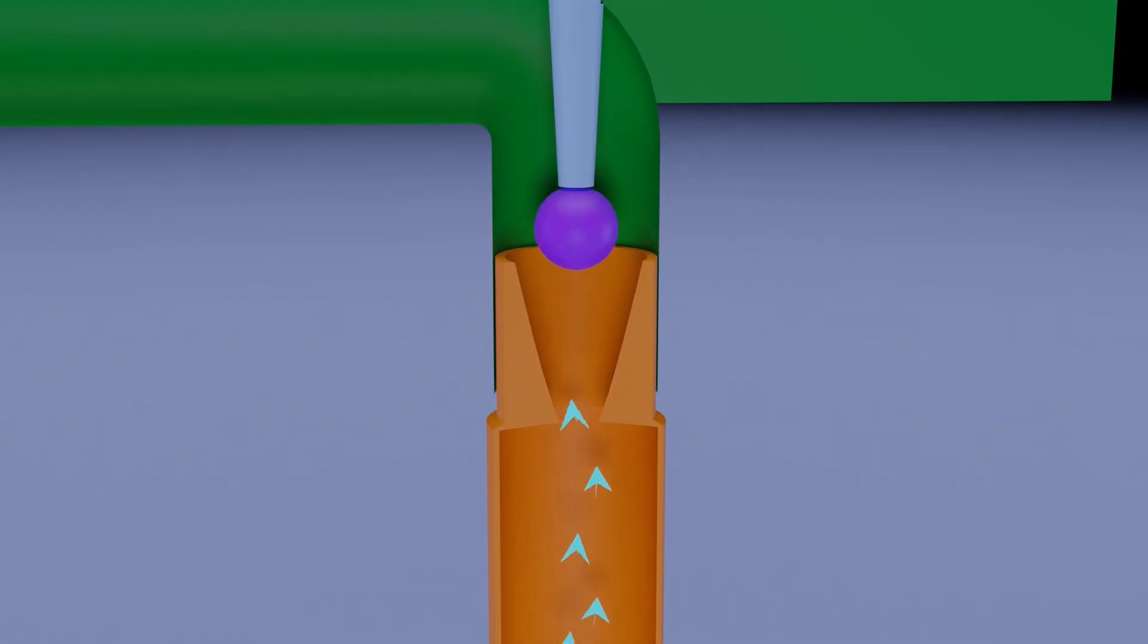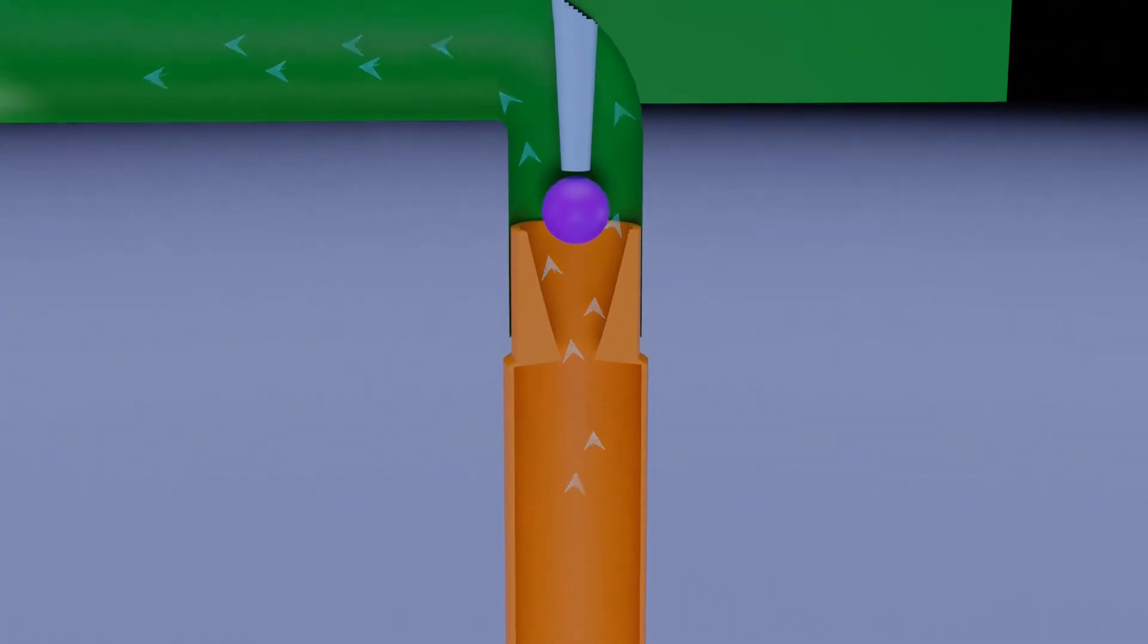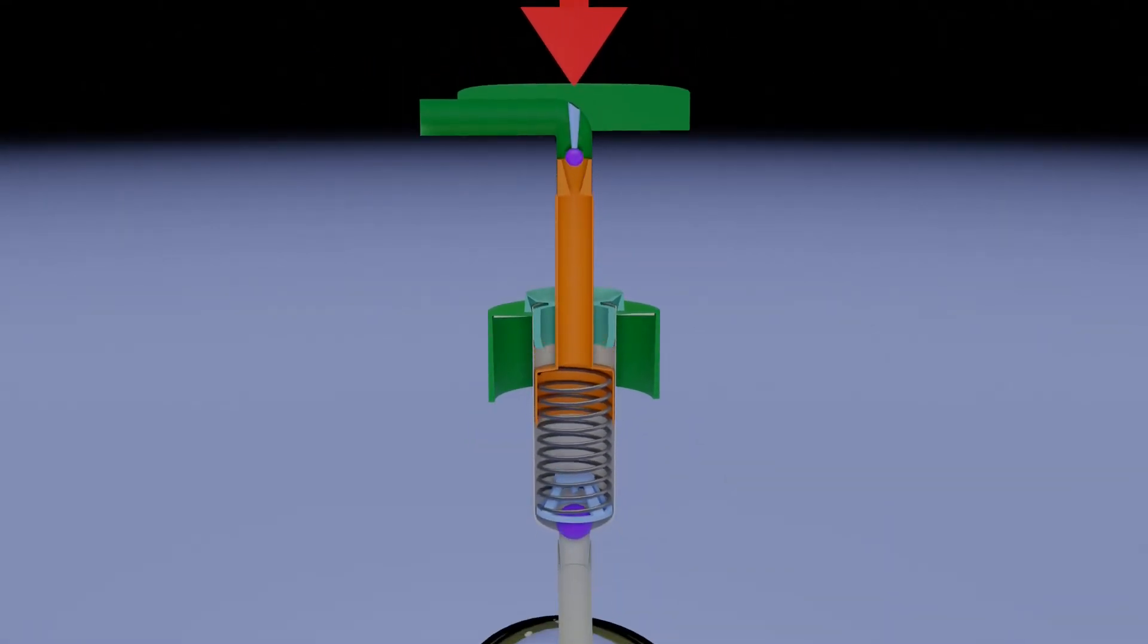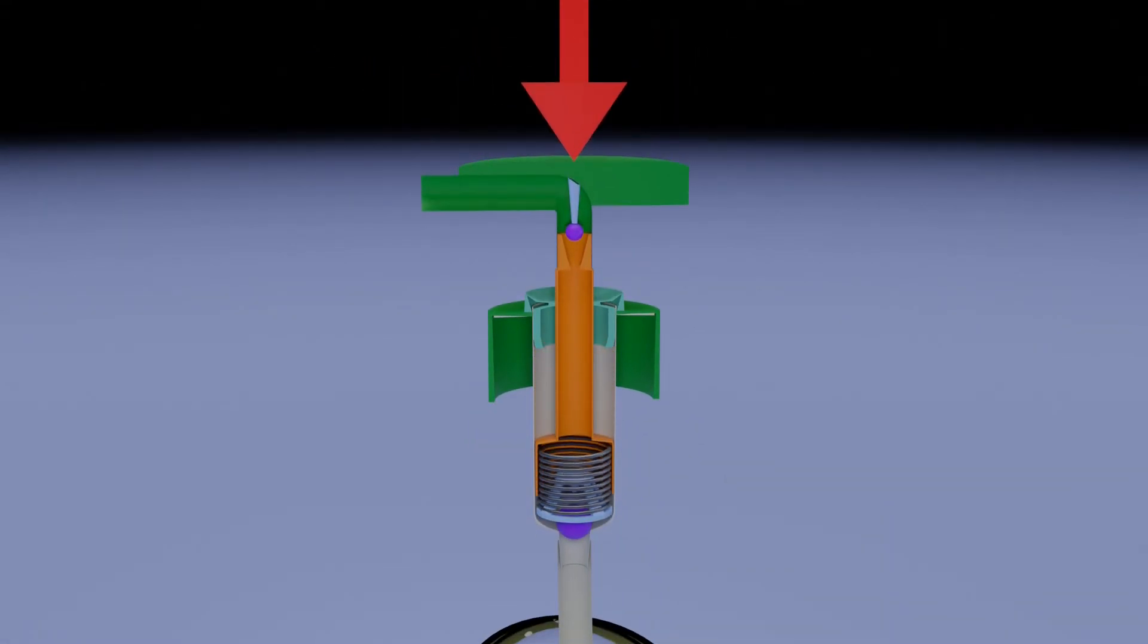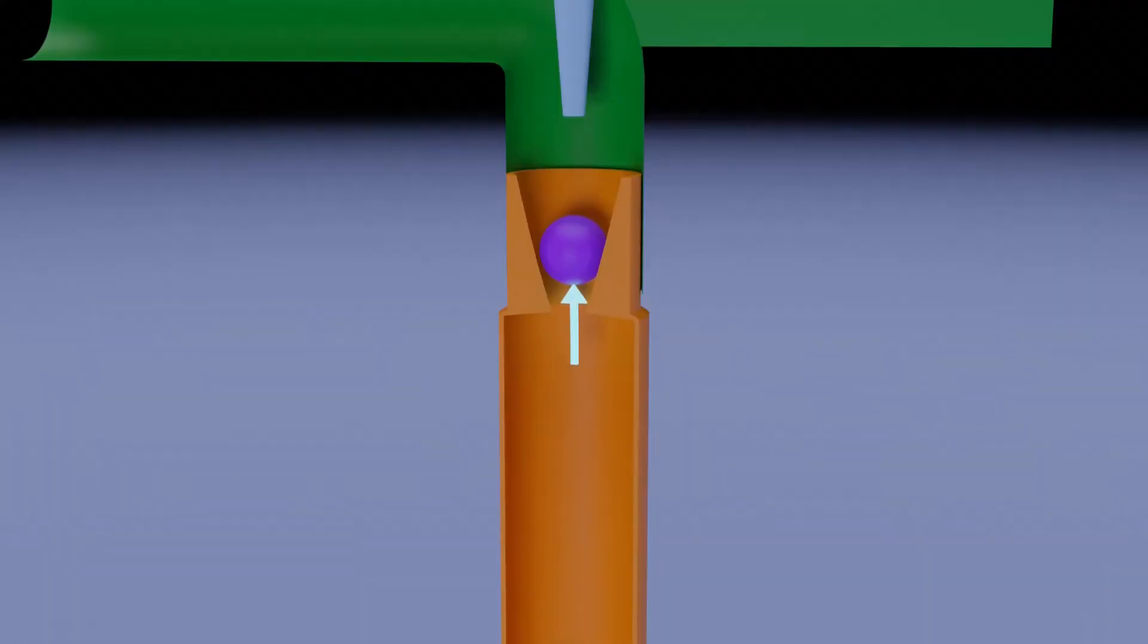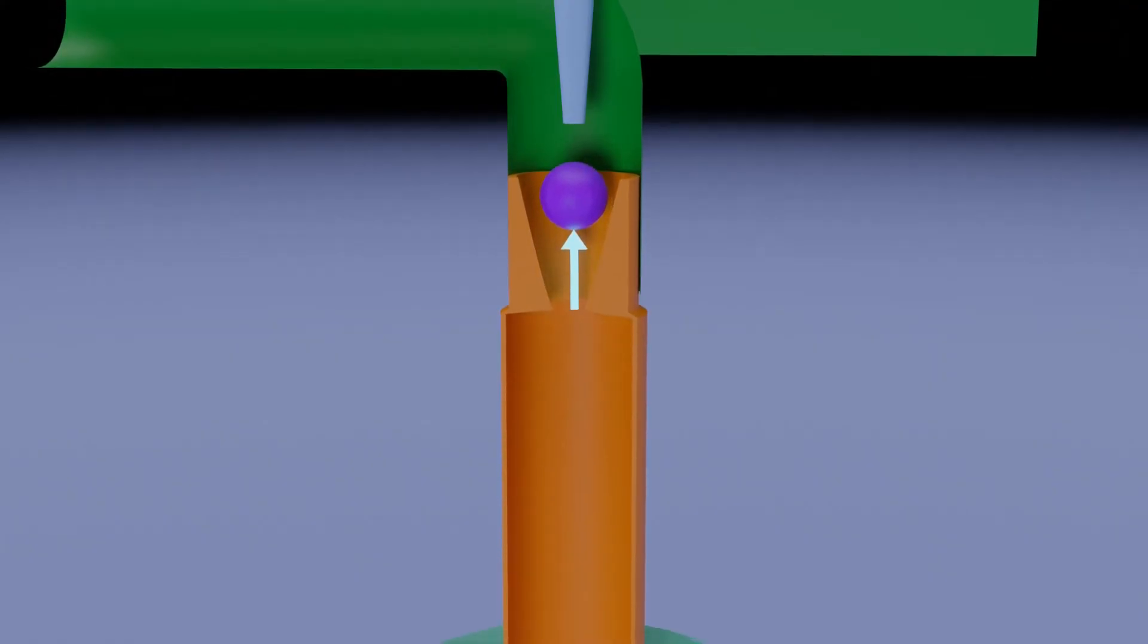When you apply force on the dispenser, the spring gets compressed and the piston pushes the liquid in the chamber upwards. The liquid lifts the upper ball and exits the dispenser.